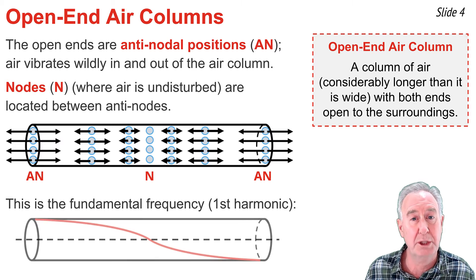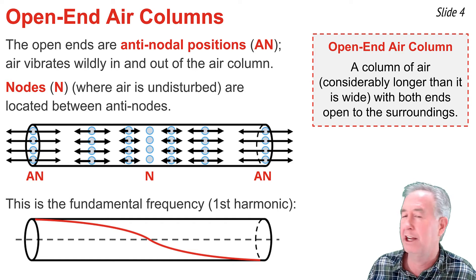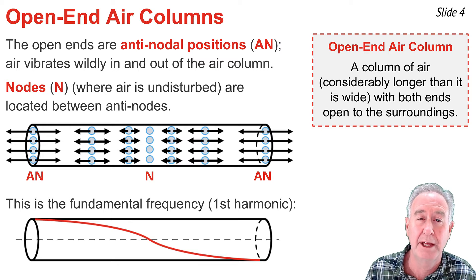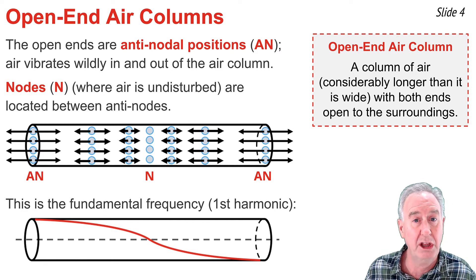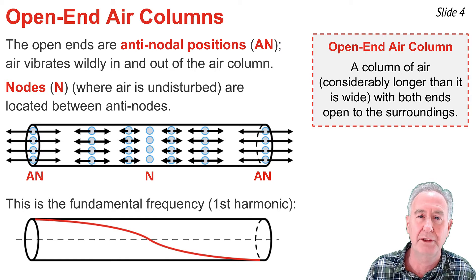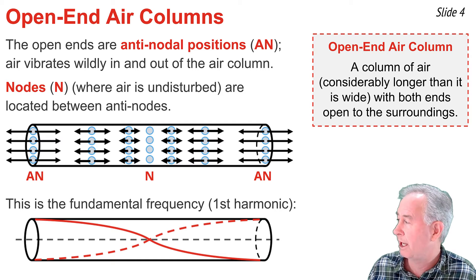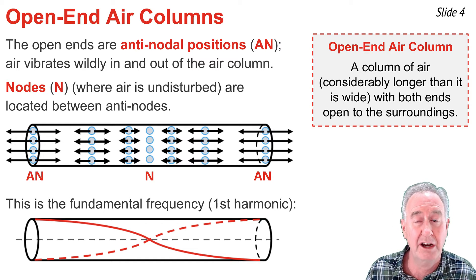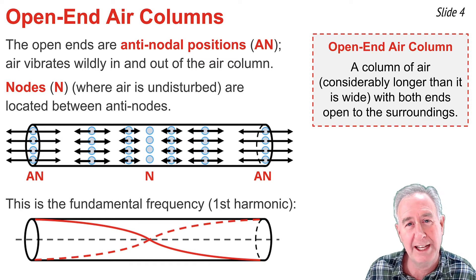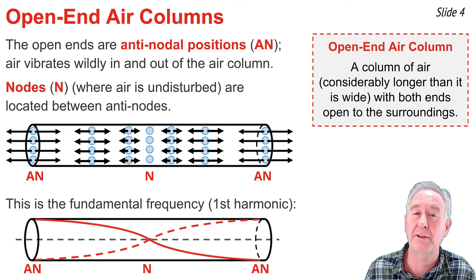Since we'll be talking a lot about the vibrational patterns of particles, we need a better way of representing them than using busy diagrams showing particle movement at various locations within the air column. So we resort to what's called a displacement plot, in which we show the displacement of particles along the air column at various locations relative to the rest position, represented by the dashed line through the center of the air column. We represent the left end of the tube as having a large positive displacement, the right end as having a large negative displacement, and in the exact middle, there's no displacement whatsoever. We're representing antinodes and nodes within the air column.